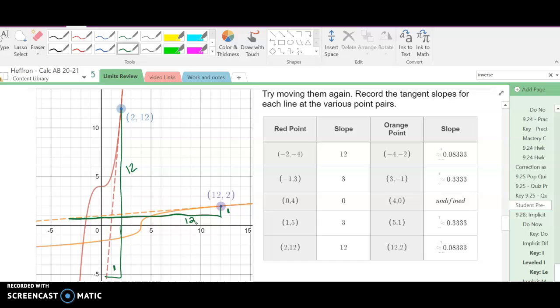So these are reciprocals of each other. Slope of 12, its reciprocal is 1/12. Three, one third. Zero, undefined. Three back to one third. Twelve, one twelfth.